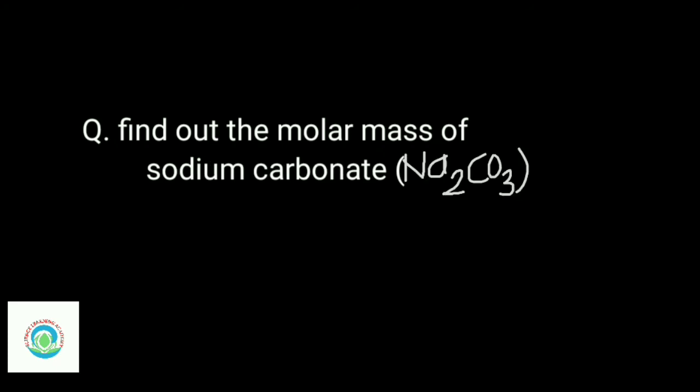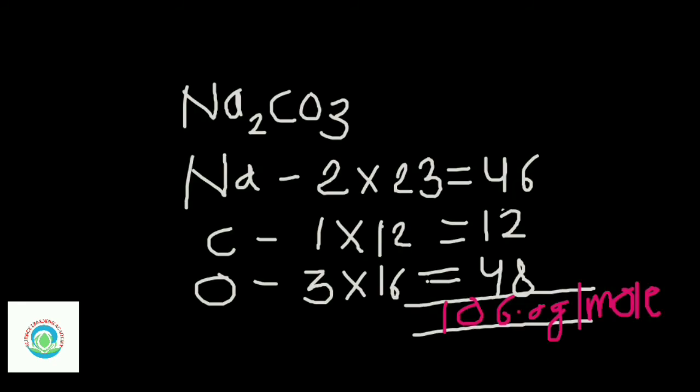If you take the molar mass of sodium, how much is it? 2 atoms, 2 into 23. Carbon: 1 into 12. Oxygen: 3 into 16. So 23, 12, 16. What is your molar mass? 46 plus 12 plus 48 is equal to 106 grams per mole. What is your molar mass? Sodium carbonate, 106 grams per mole.